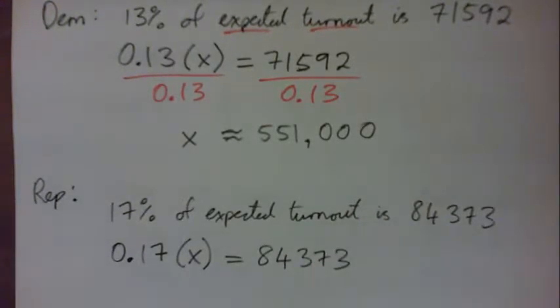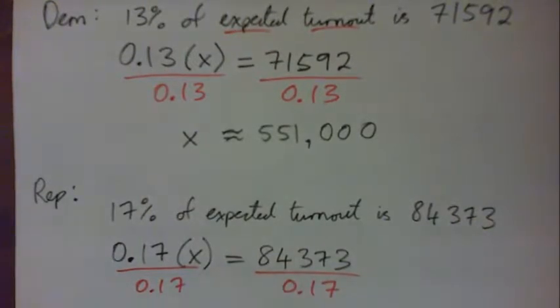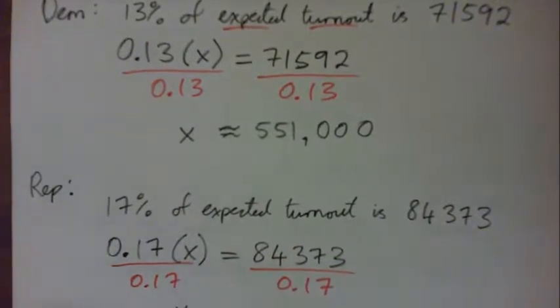And now we've got to get X on its own, so divide again, right? And I'm going to round that—it's about 496,000, something like that.